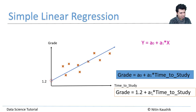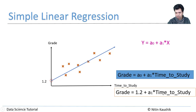What this essentially means is: if a student puts zero time into study, he will get a grade of 1.2 by default, because time to study times a₁ equals zero, leaving only the constant 1.2. So a student who doesn't study at all will still get a grade of 1.2 — that's what this equation means. And a₁ is the slope.